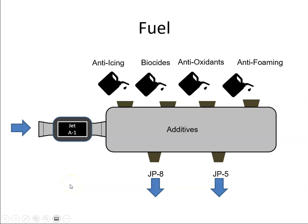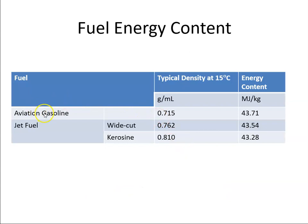That's the background to aviation fuels. Looking at their energy content: aviation gasoline has an energy content of 43.7 megajoules per kilogram. Wide-cut fuel — another name for Jet B — has an energy content of 43.54, and kerosene has 43.28 megajoules per kilogram.